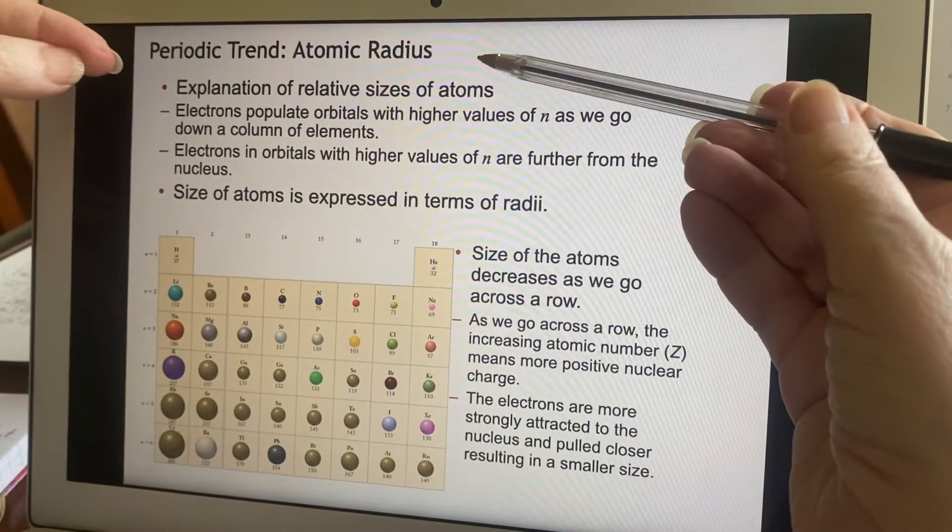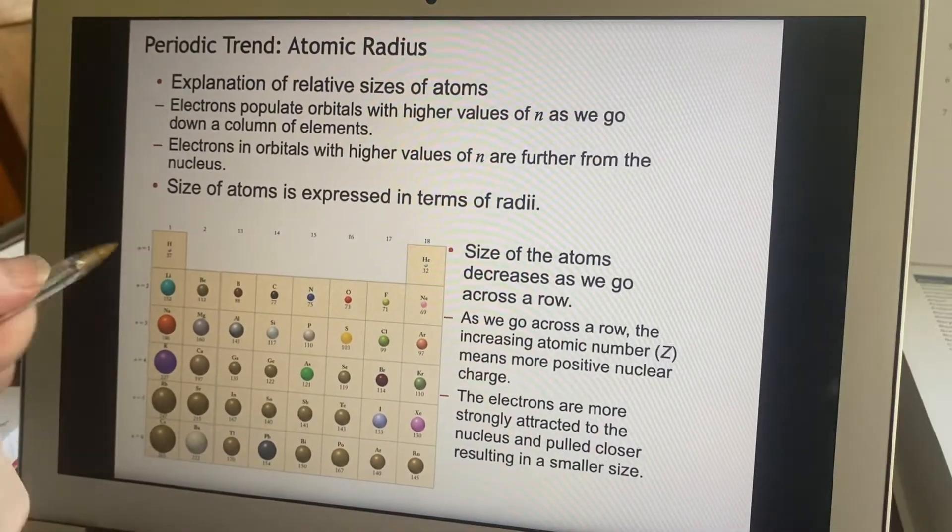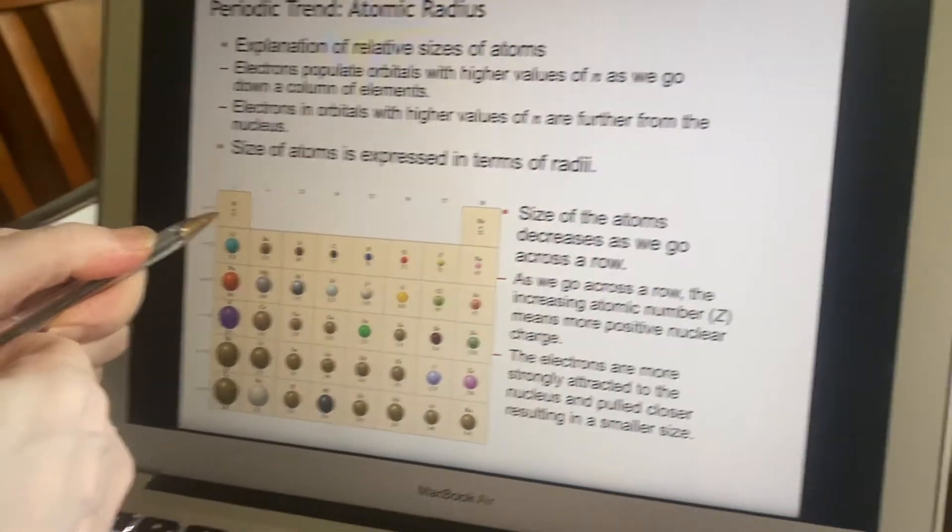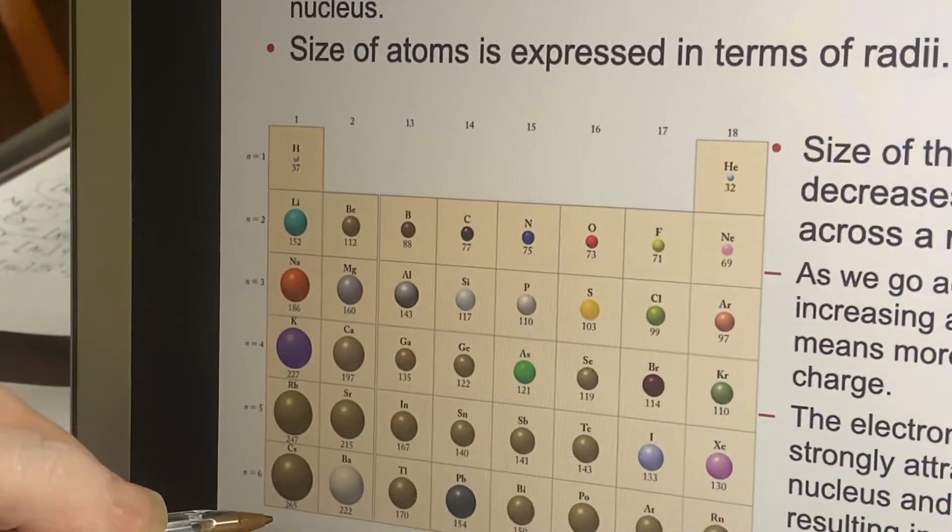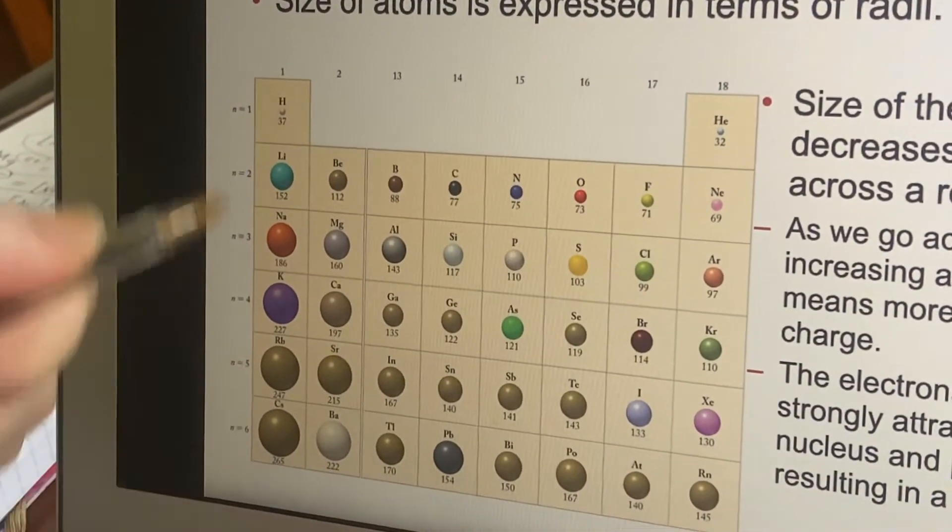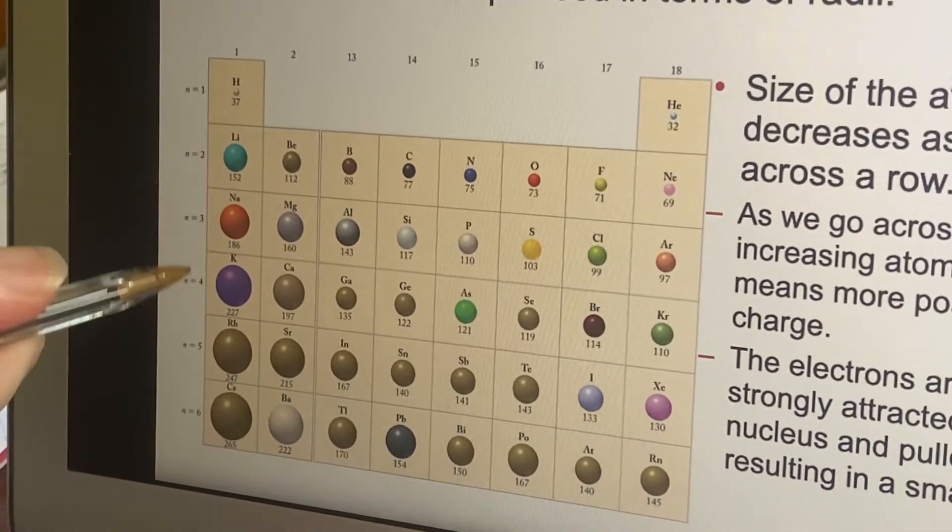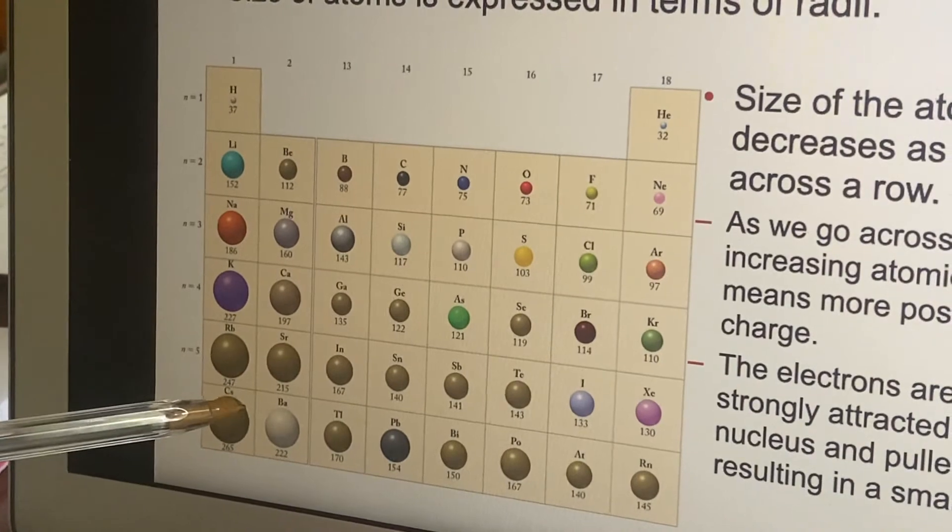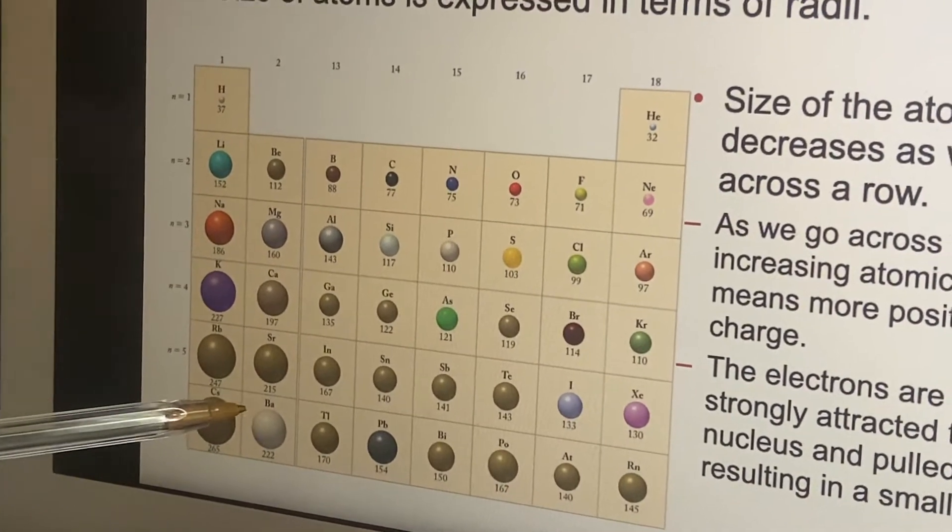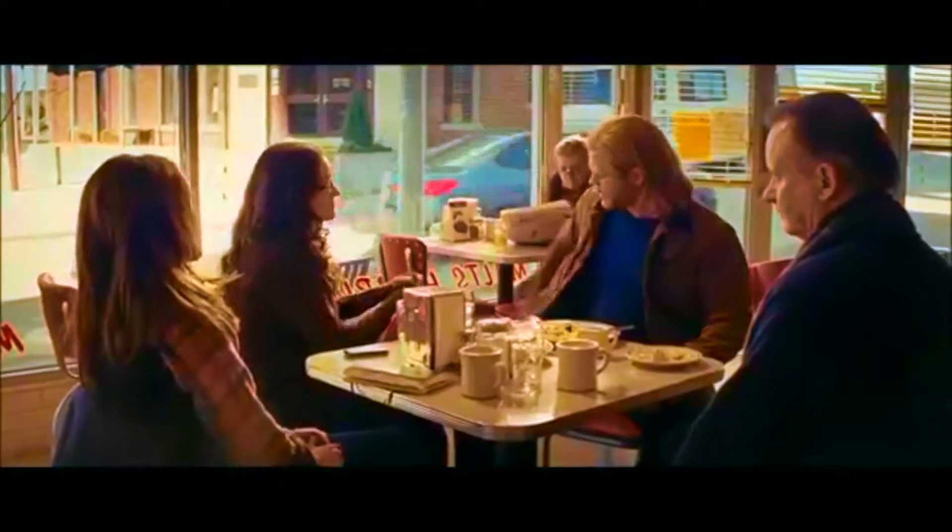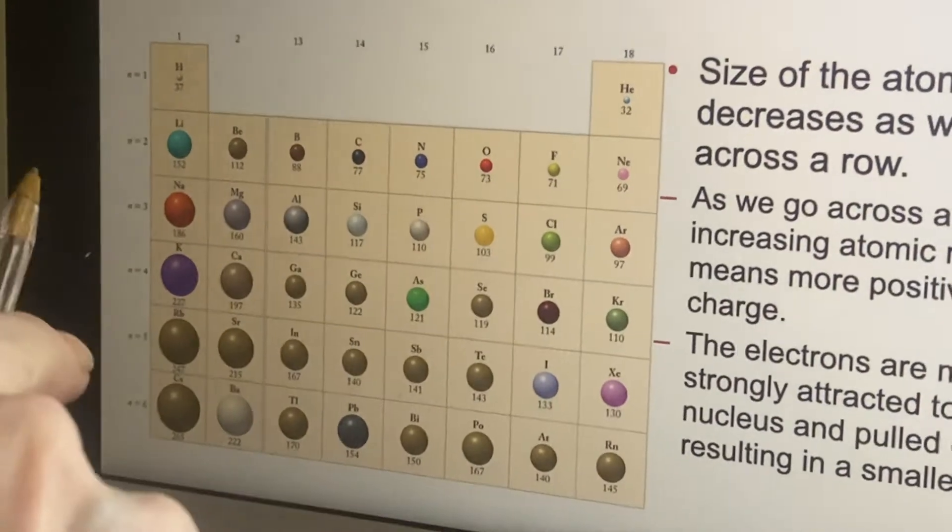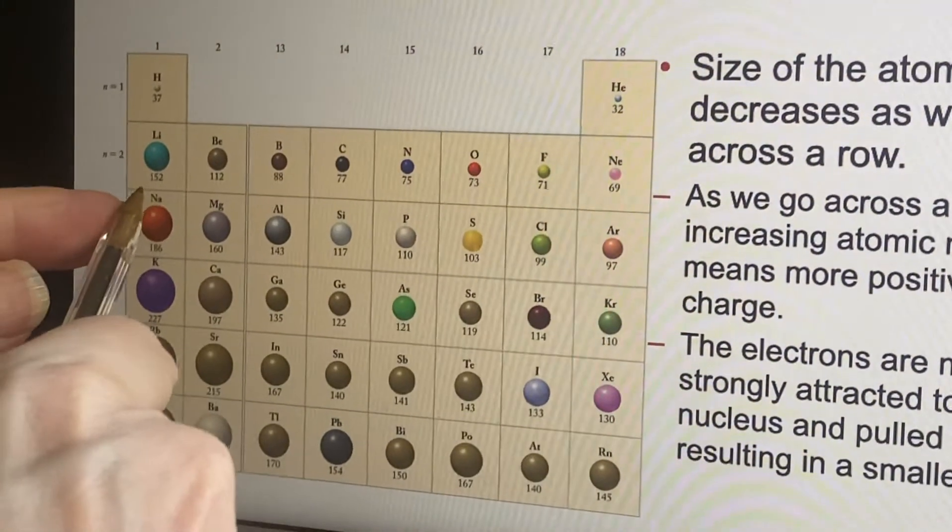So this periodic trend is about atomic radii. It is not really a surprise that as you go down the table things get bigger. This makes perfect sense to us because we keep adding protons and electrons, so why wouldn't it get bigger? Perfect sense.